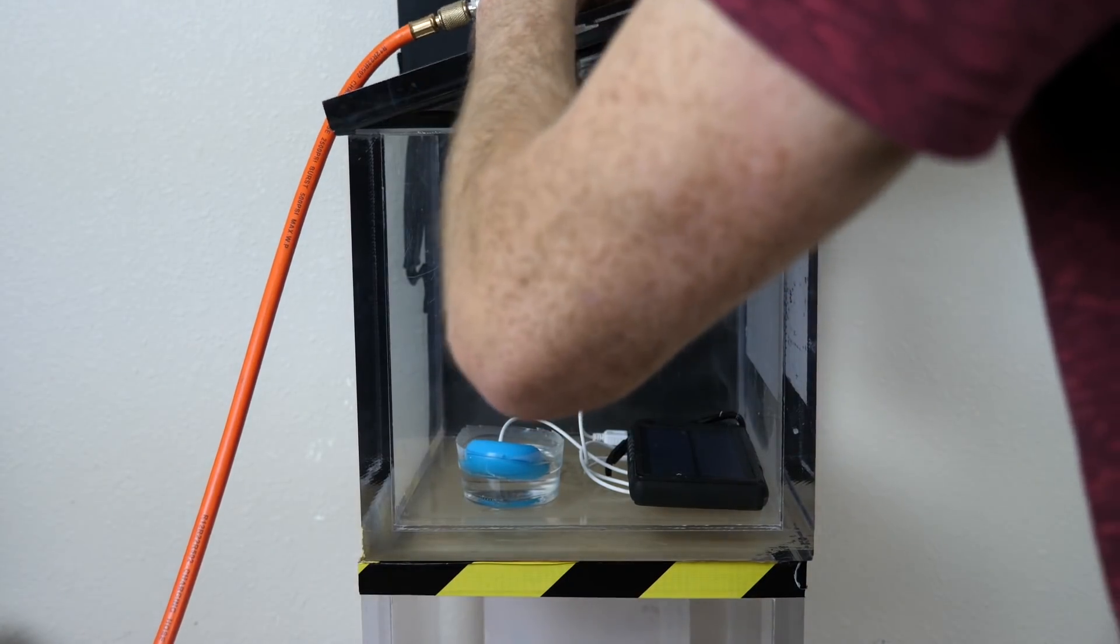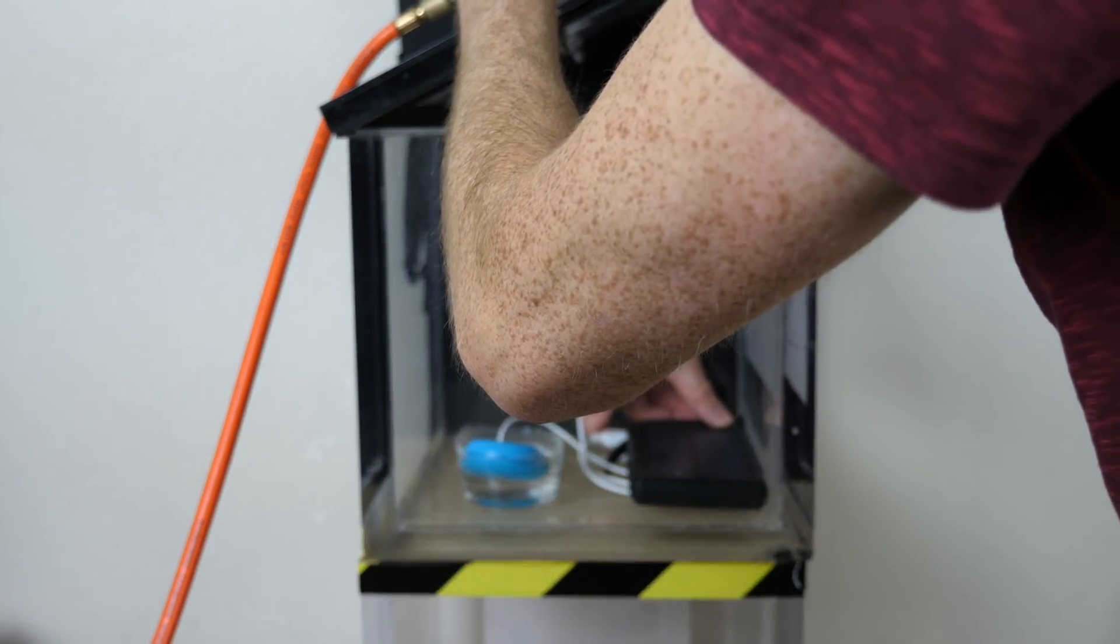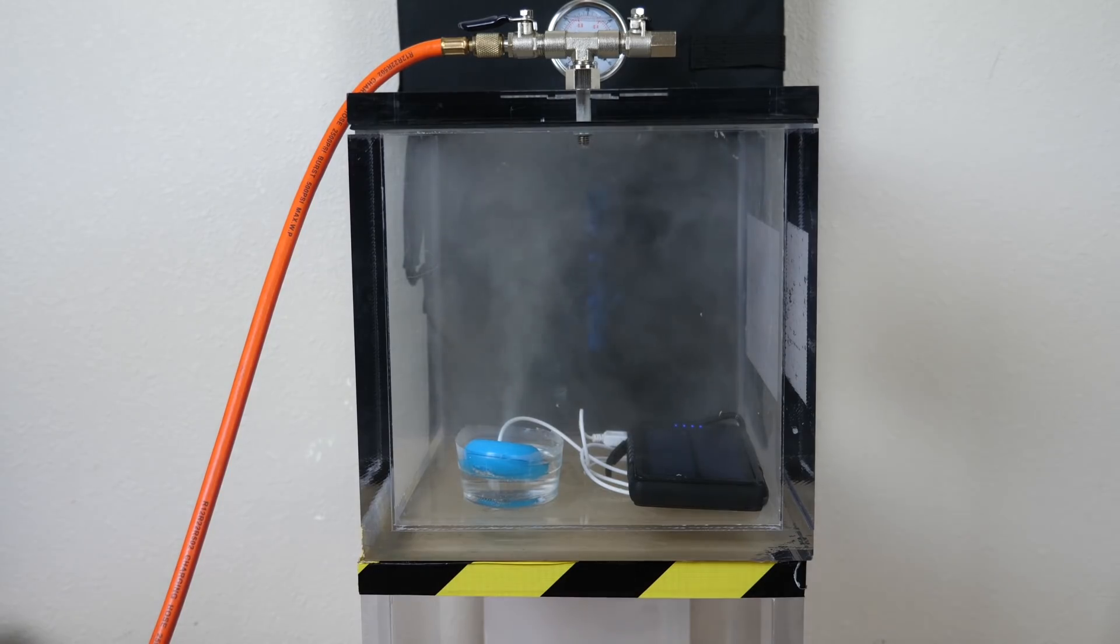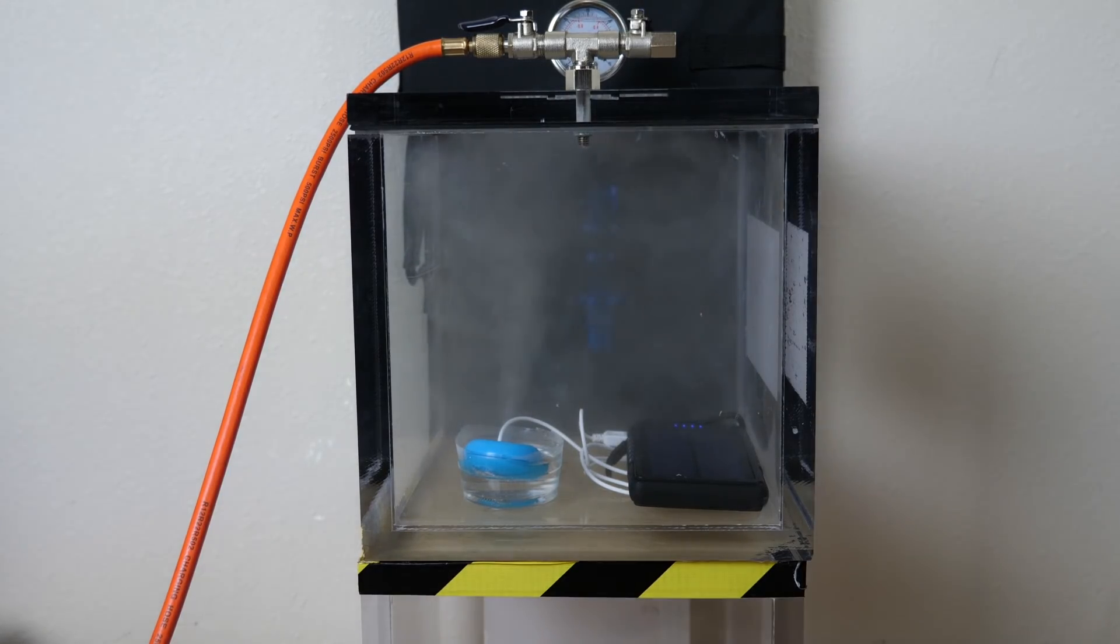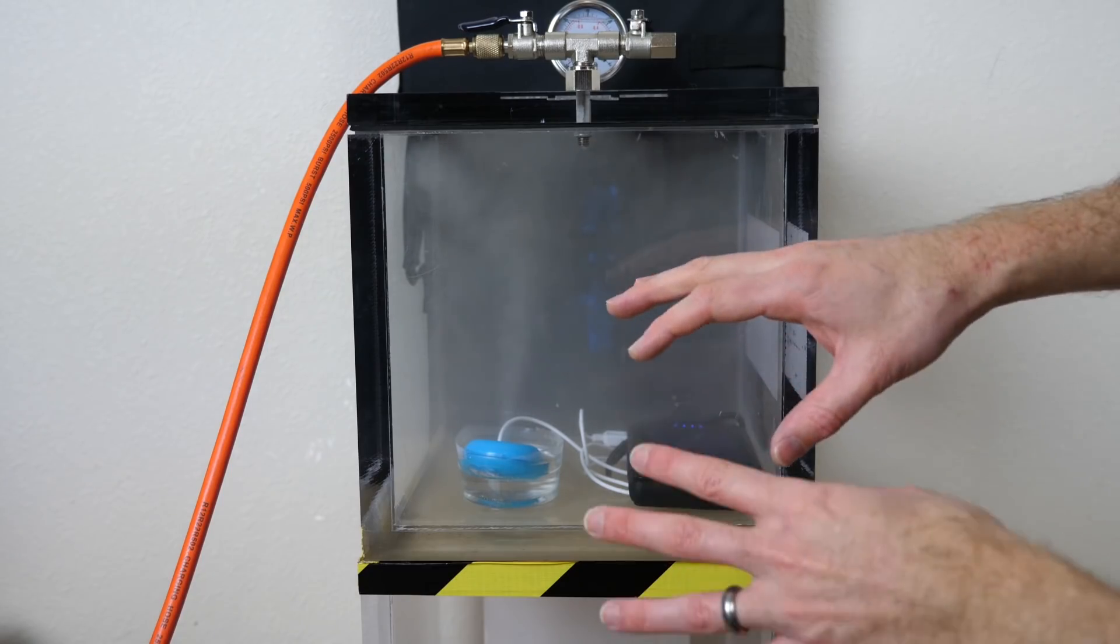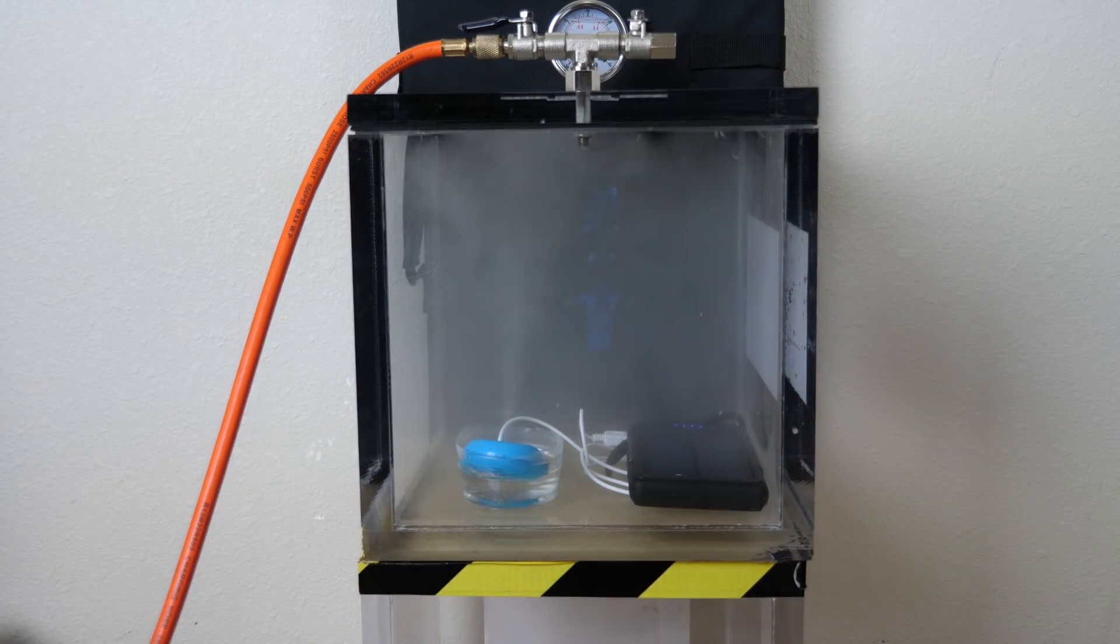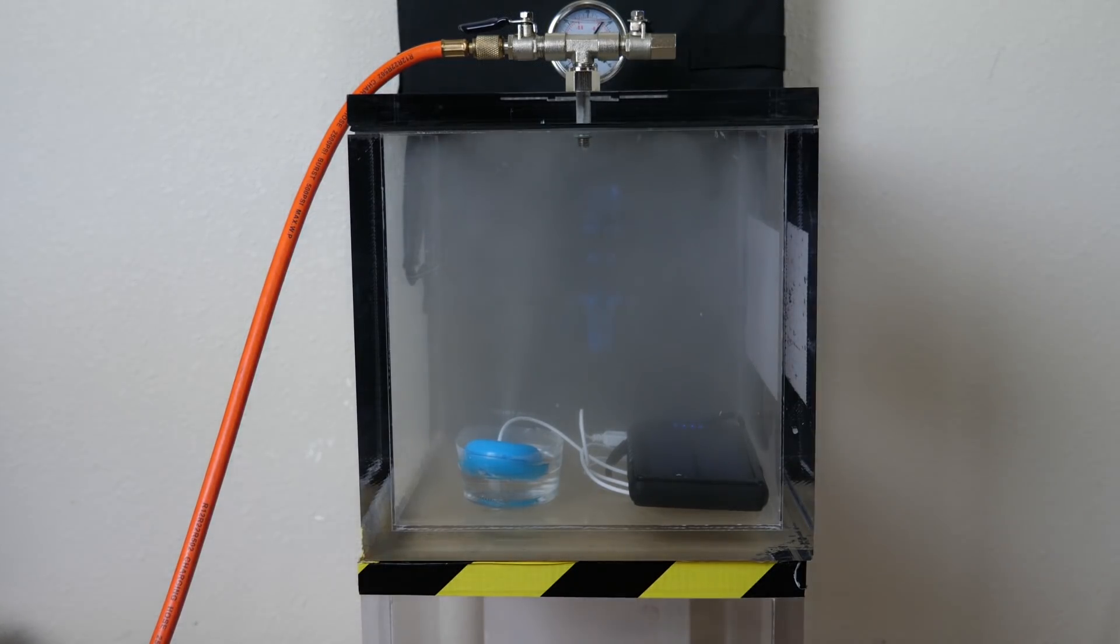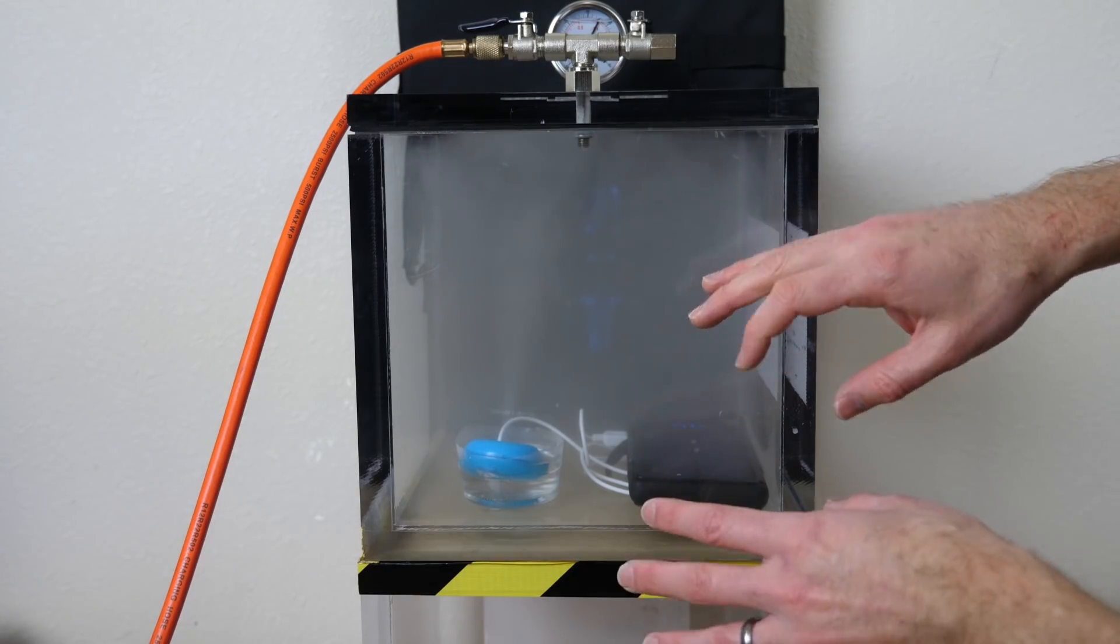Okay. Humidifier in a vacuum. Three, two, one. Okay. It's starting to fill up with the mist already. Getting cloudy in there. We're at half an atmosphere.